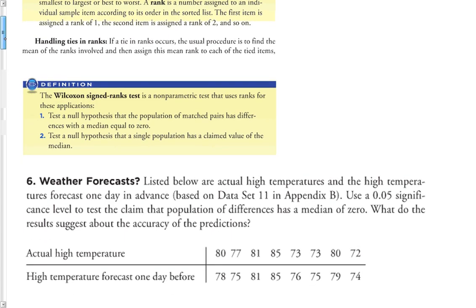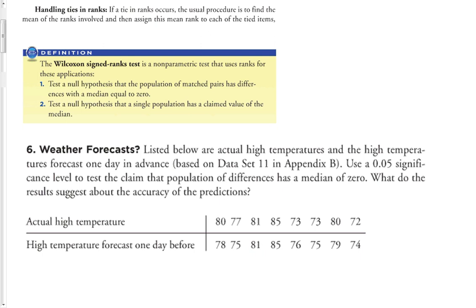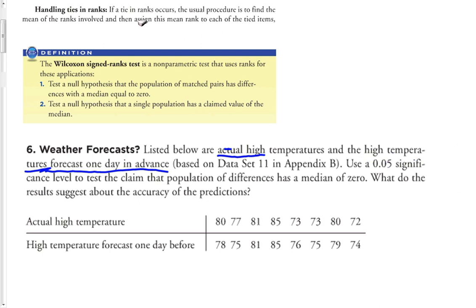Let's take a look at an example where we're doing this first application — testing a null hypothesis that a population of matched pairs has a difference with a median equal to zero. In this case, we have matched pairs which are actual high temperatures and forecast one-day high temperatures. We're going to use a 0.05 significance level to test the claim that the population of differences has a median of zero.